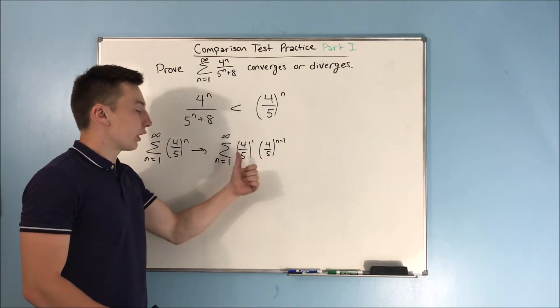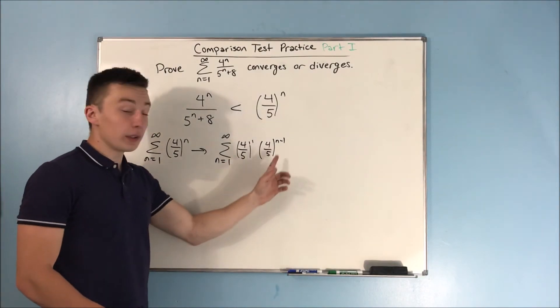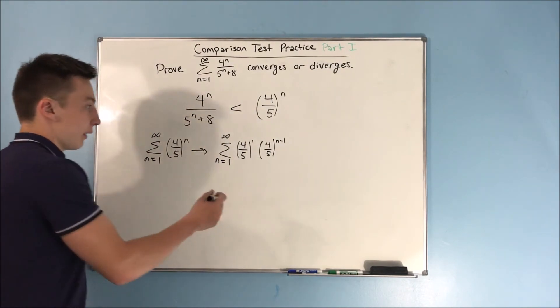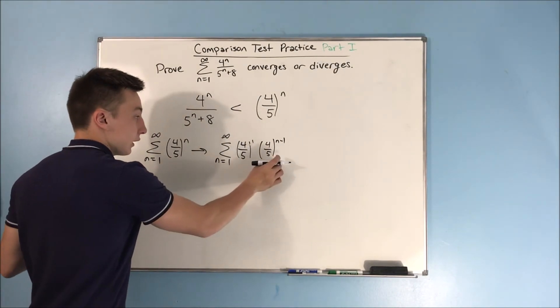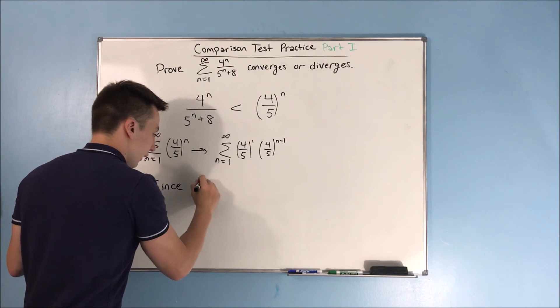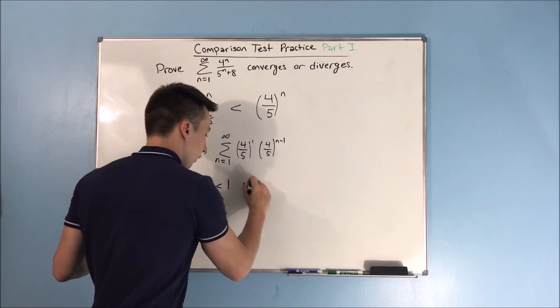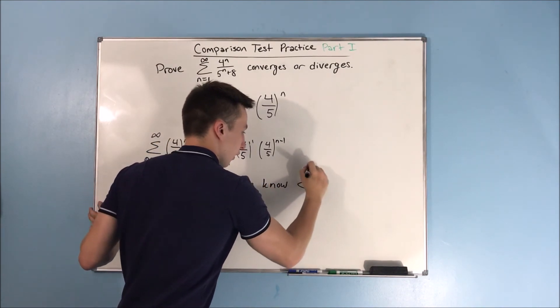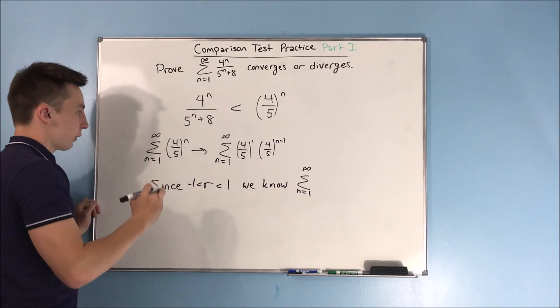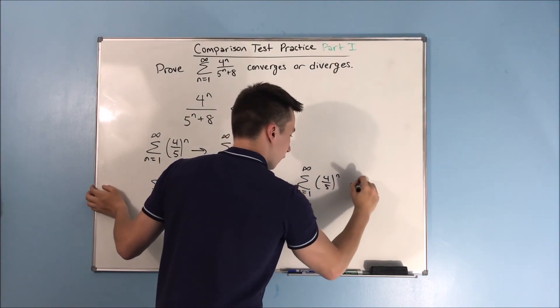We have a times r to the n minus 1. This r is going to tell us if this thing is convergent or divergent. Now, since r is greater than negative 1 and less than 1, we know that the series of the sum n equals 1 to infinity of 4 over 5 to the n converges.